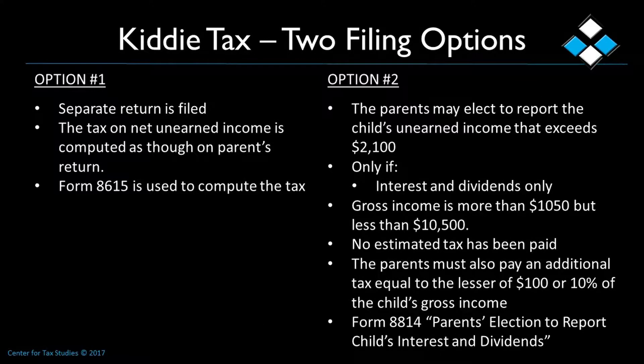There are two filing options for the kiddie tax. First, you can file a separate tax return for the child — the tax on net unearned income is computed as though on the parent's return, and Form 8615 is used to compute the tax. Or the parents may elect to report the child's unearned income that exceeds $2,100, but only if gross income is from interest and dividends only, gross income is more than $1,050 but less than $10,500, no estimated tax was paid in the child's name and social security number, and the child is not subject to backup withholding. The parents must also pay an additional tax equal to the lesser of $100 or 10% of the child's gross income over $1,000. Form 8814, the parent's election to report child's interest and dividends, must be filed.